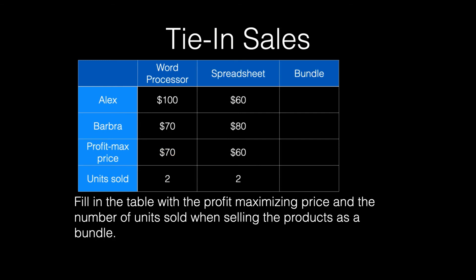Now let's explore how much the firm can earn if it sells the products as bundles. First, we need to calculate each consumer's reservation price for the bundle. Alex is willing to pay $100 for the word processor and $60 for the spreadsheet, so Alex would be willing to pay $160 for the bundle. Adding up the prices that Barbara is willing to pay for each of the products yields a bundle price of $150 for Barbara.